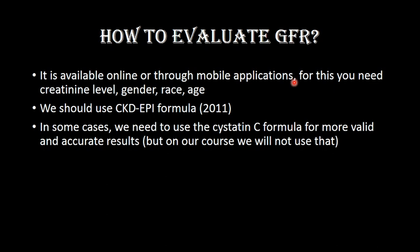How to evaluate glomerular filtration rate? It is quite easy. We can use mobile applications, online calculators. We need the creatinine level, gender, race, and age. At the current moment we use the CKD-EPI formula. Sometimes, if available, we can use the cystatin C formula, because cystatin C is a substance that is filtered only by the kidneys. It may be necessary to compare the GFR by creatinine level and cystatin C to get more accurate results.